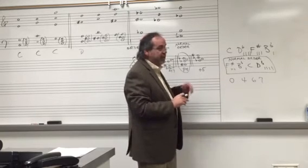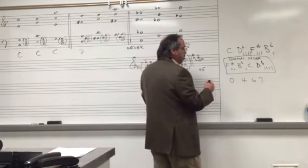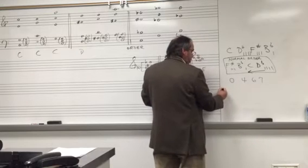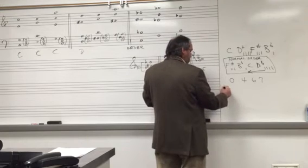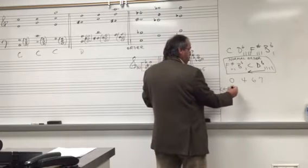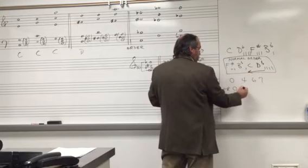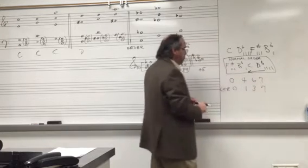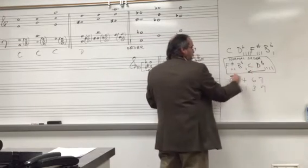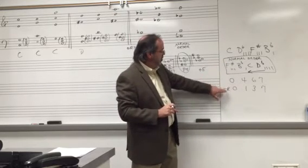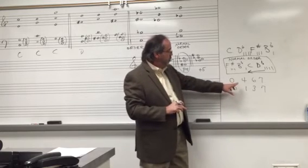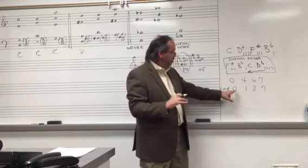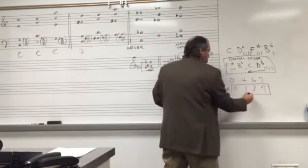Now we have to read it from right to left and do the exact same process. Reading right to left, we get: D-flat equals zero, C equals one, B-flat equals three, and F-sharp equals seven. So the set reading that way would be zero, one, three, seven. We then take these two sets of numbers and find which one packs closest to zero. Zero to one is packed tighter than zero to four. So zero, one, three, seven would be the name of our set.